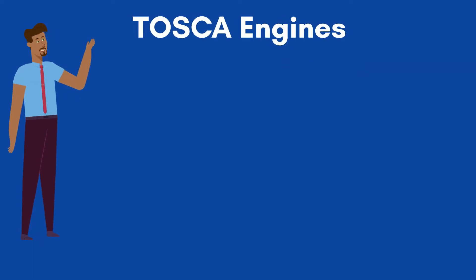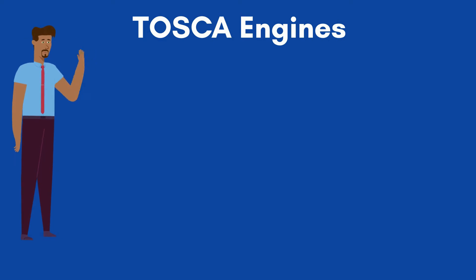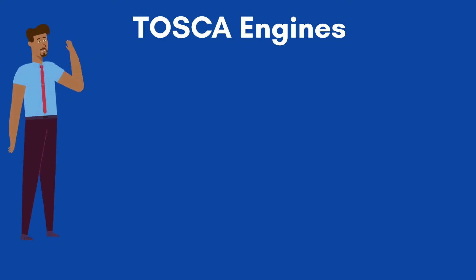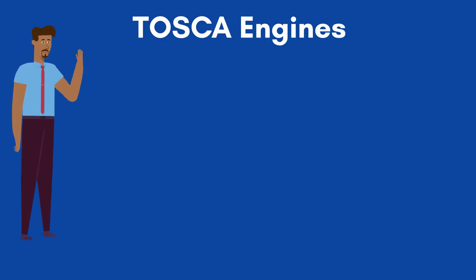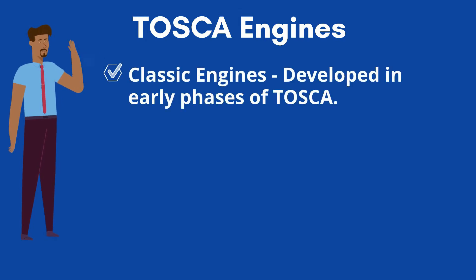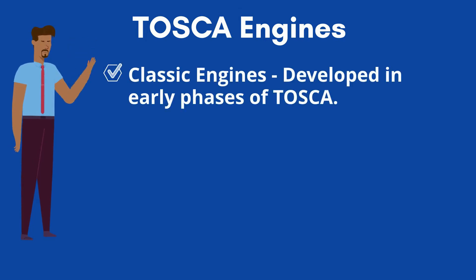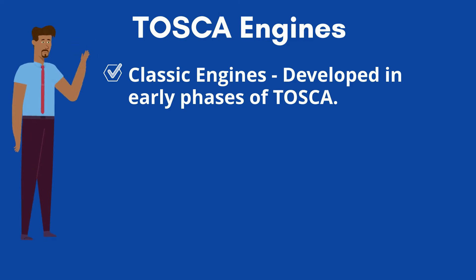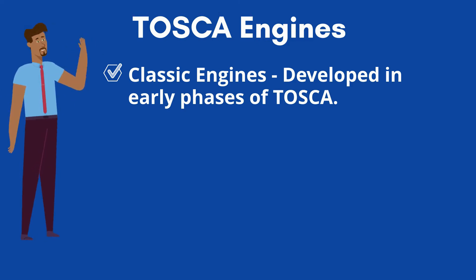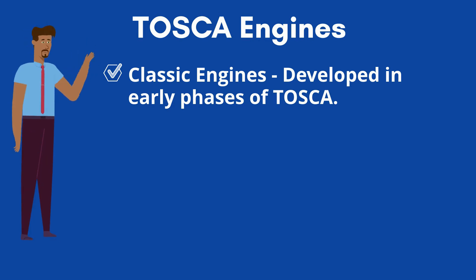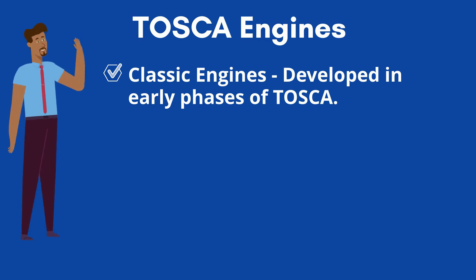Now, let's understand the different types of Tosca engines which will help to automate any applications. Classic engines: in the early phase of Tosca, classic engines were developed to process test case information and steer the test object. There are respective engines available to steer any test object.